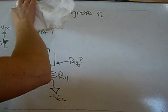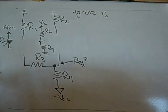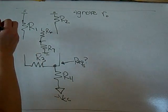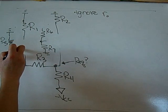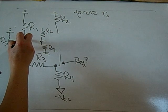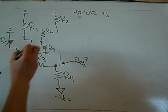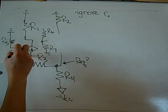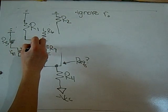All of the DC sources will be grounded. This was the base, so this is rpi-1, VBE-1, and GM-1.